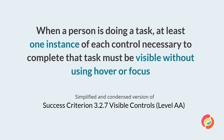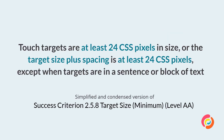Target size in WCAG 2.1 was only a AAA requirement, but in 2.2 we've got a new proposed criteria: 2.5.8, Target Size Minimum. This requirement suggests that touch targets be at least 24 CSS pixels in size, or that the target size plus spacing is at least 24 CSS pixels, except when the targets are in a sentence or block of text like a link in a paragraph. Interestingly, Google and Apple guidelines still recommend a touch target size of 44 CSS pixels or larger, which aligns with the AAA touch size requirement. So what do I say? Go big or go home.